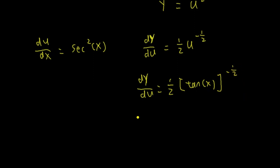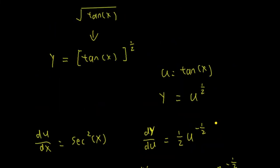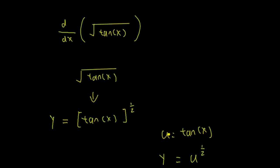Since u equals tangent of x, we replace u. So dy/du equals 1 half times tangent of x to the power of negative 1 half, which I can rewrite as 1 over 2 times 1 over square root of tangent x. We are differentiating square root of tangent x, which is tangent of x to the power of 1 half.